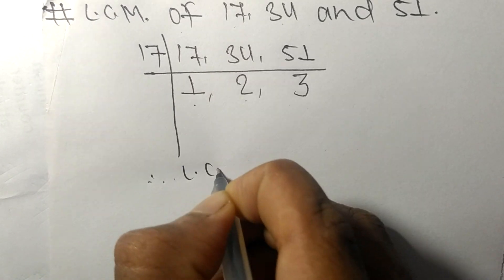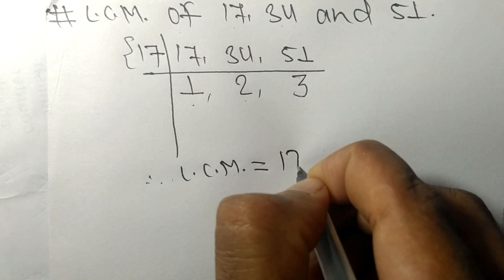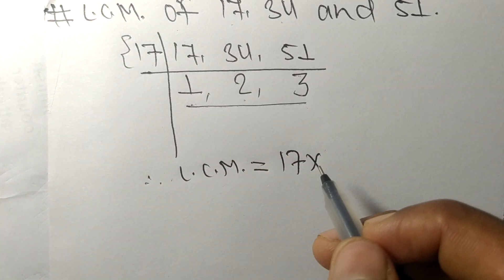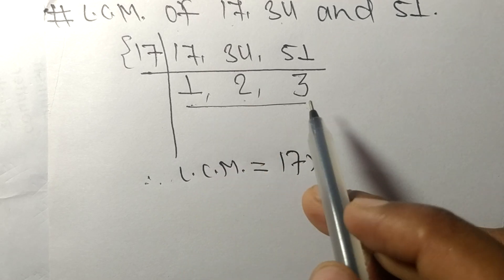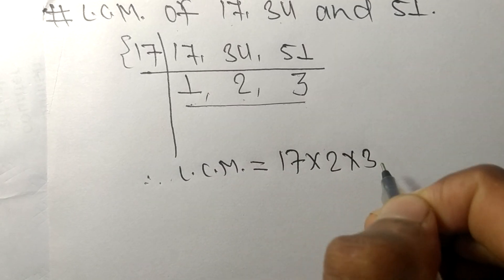Therefore its LCM is equal to, from this side it is 17, from this side we choose the numbers greater than 1, that is 2 and 3.